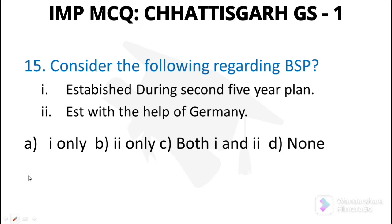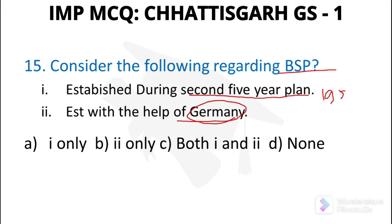Question number 15: Consider the following regarding BSP — Bhilai Steel Plant. It was established during the second five-year plan, from 1956 to 1959. It was made with the help of Russia, not Germany. So option 1 only is correct.